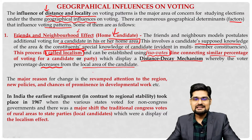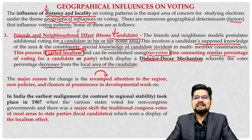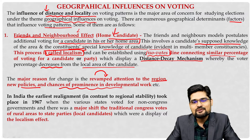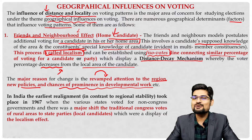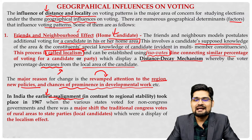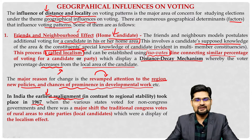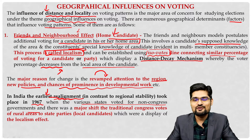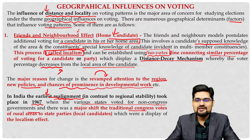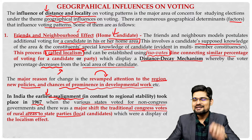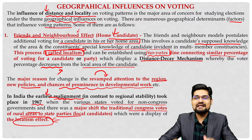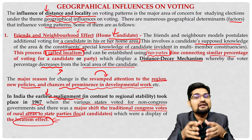The major reason for change is the revamped attention to the region — new policies, chances of prominence and developmental work which influence this localism. In India, for example, in the earliest realignment in 1967, various states voted for non-congress governments. There was a major shift in voting pattern from traditional congress votes in rural areas toward state parties and local candidates who were favored more in that election. Localism effect is still playing a vital role as a geographic influence.